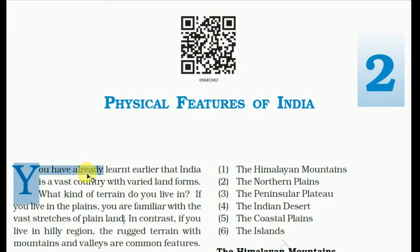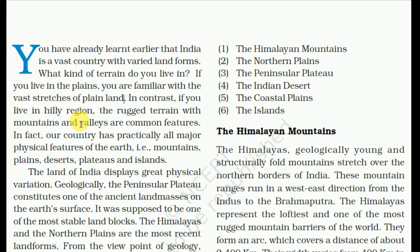We have already learned earlier that India is a vast country with varied landforms. What kind of terrain do you live in — plains, deserts, flat views, or the Himalayan mountains? If you live in a plain, you are surrounded by vast stretches of plain land. If you live in a hilly region, the rugged terrain with mountains and valleys are common features.